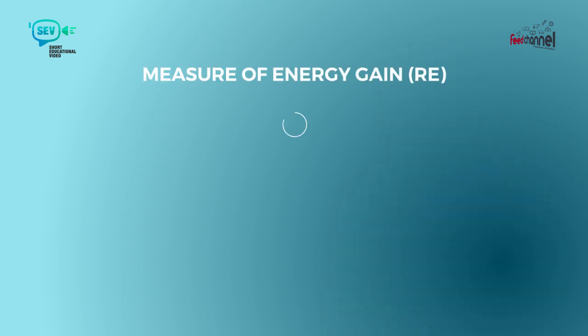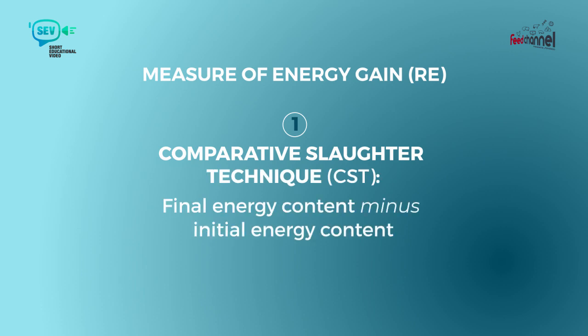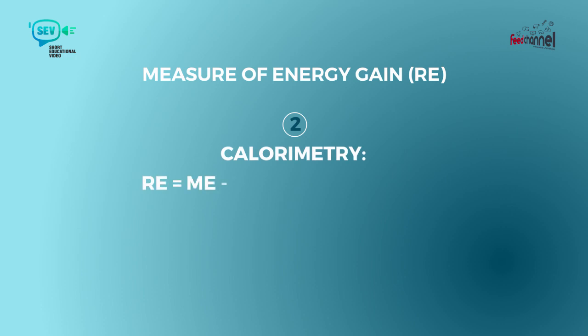With regard to energy gain, there is a first technique that has been widely used in the past: the so-called comparative slaughter technique. This technique consists in measuring the final energy content in the body of an animal minus its initial energy content at the beginning of the experiment, so we obtain the energy gain over the trial. This technique has been widely used in the past in small and larger size animals, but has been progressively replaced by the so-called calorimetry methods.